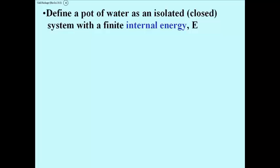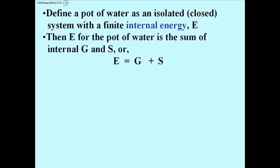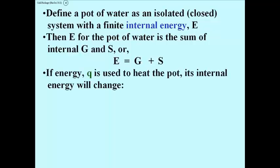We imagine the pot of water has a finite internal energy content called E. We don't know the actual number for E, but we can write the equation: whatever it is, it equals the sum of the internal free energy and internal entropy of the pot. So we write E equals G plus S. I still can't assign numbers to E, G, or S, but we're about to get to the point where we can.